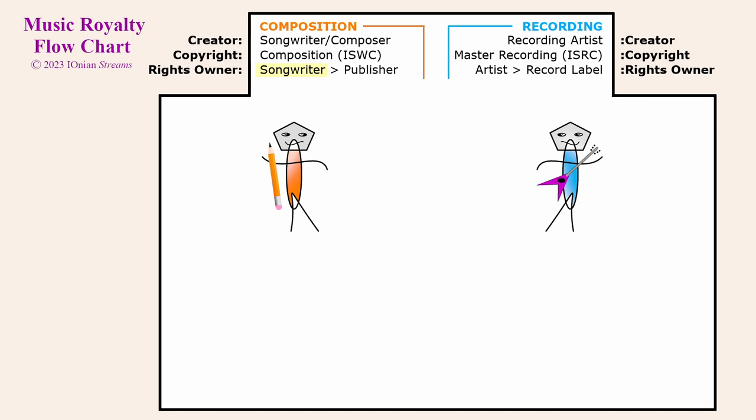The owner of the composition copyright is the songwriter, unless the songwriter confers the copyright to a publisher by entering into a publishing deal. The copyright on a composition is sometimes called a publishing right. The owner of the recording copyright is the recording artist, unless the recording artist confers the copyright to a record label by entering into a record label deal. The copyright on a master recording is sometimes called a label right. Independent songwriters and recording artists are independent because they don't enter publishing or record label deals — they keep their copyrights, but typically still need some of the services that publishers and labels provide.